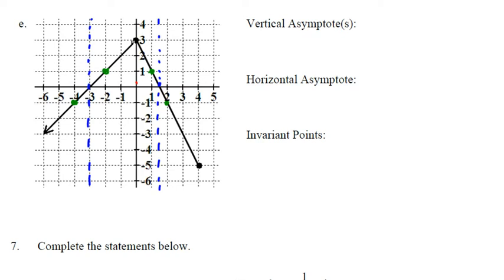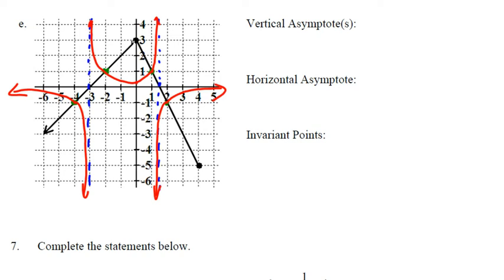From this point we're going to head to the 1, and then as these values get smaller, we're going to head up the asymptote. The same thing happens on this side. Then the usual: down the asymptote and over, not crossing the asymptote.